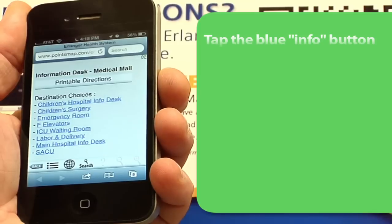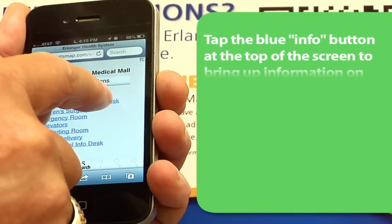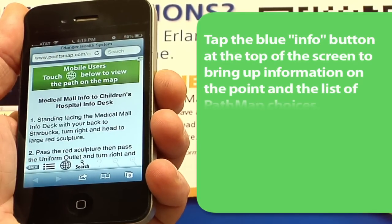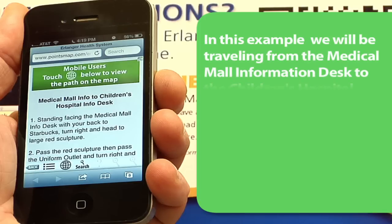Tap the blue Info button at the top of the screen to bring up information on the point and the list of PathMap choices. In this example, we will be traveling from the Medical Mall Information Desk to the Children's Hospital Information Desk.